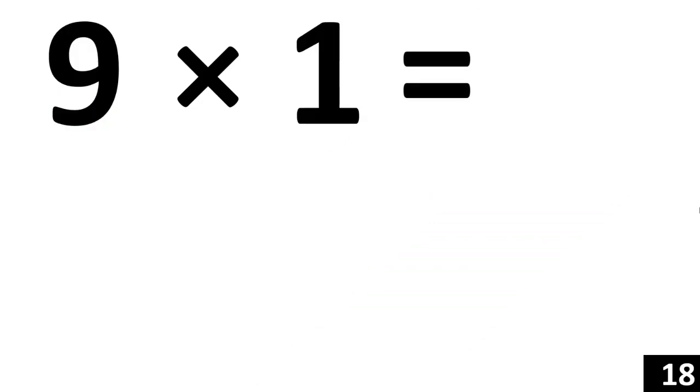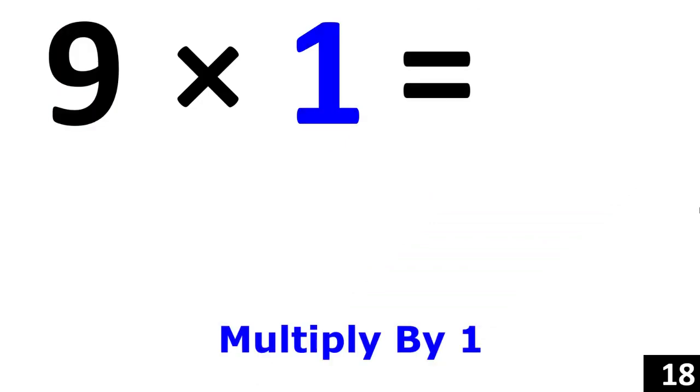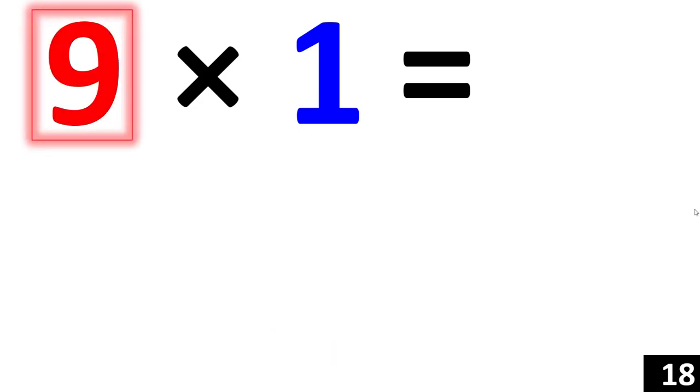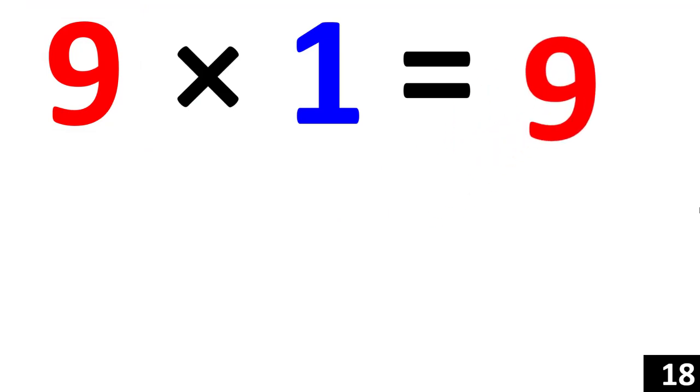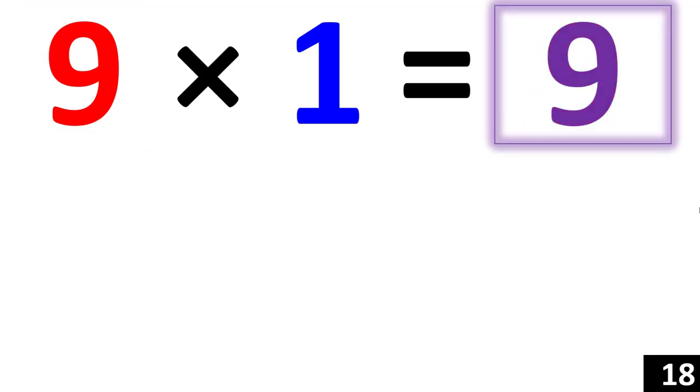For 9 times 1, we just use the rule of 1. Any number times 1 is that number. So, 9 times 1 is equal to 9.